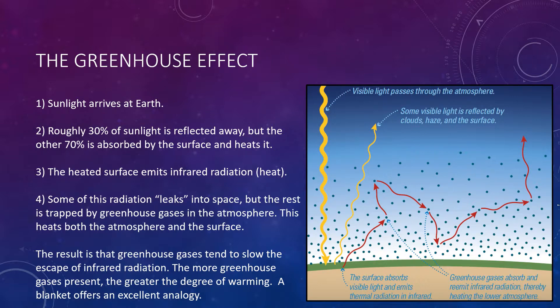The now heated surface then emits thermal radiation, or infrared radiation — it's a warmer surface, so if you used a thermal camera, you would see it glowing slightly. Some of this radiation leaks back into space, but the rest is trapped by the greenhouse gases in the atmosphere, heating both the atmosphere and the surface below.